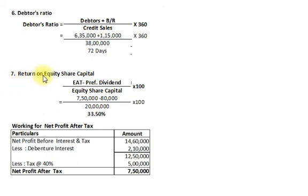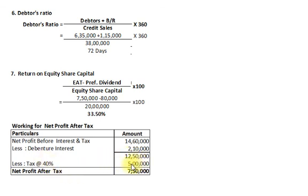Seventh and last ratio: Return on Equity Share Capital. Formula: (earnings after tax − preference dividend) ÷ equity share capital × 100. Net profit before interest and tax Rs. 14,60,000, minus debenture interest Rs. 2,10,000 = net profit before tax Rs. 12,50,000, minus tax at 40% Rs. 5,00,000 = net profit after tax Rs. 7,50,000, minus preference dividend Rs. 80,000. Equity share capital Rs. 20,00,000. Return on Equity Share Capital = 33.50%.